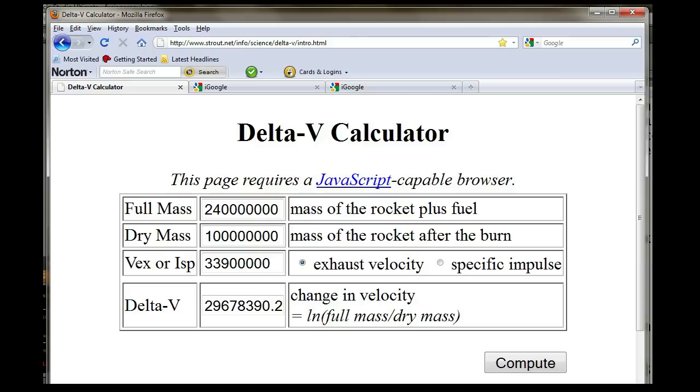But we're not finished yet. When we get there, we have to stop. So we have to take the 240,000 metric tons as the initial payload and figure out what it will take in propellant to get all that to one-tenth light speed.